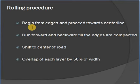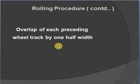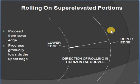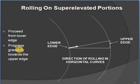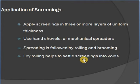Rolling process: overlap of each preceding wheel track by one-half width — from edges to center and back. On super-elevated portions, proceed from the lower edge gradually towards the upper edge. Application of screenings: apply in 3 or more layers of uniform thickness using hand shovels or mechanical spreaders. Spreading is part of the rolling and groaning process; dry rolling helps settle screenings into voids.